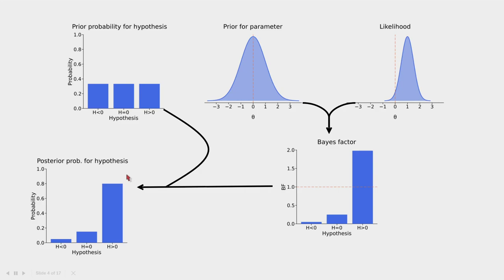This is for one study. To accumulate or combine evidence across multiple studies, we essentially repeat the same procedure — we compute a new likelihood based on each dataset. The difference is that on the second iteration, we don't start with equal hypothesis probabilities; instead, the posterior from the first analysis becomes the prior for the second analysis. Then that posterior becomes the prior for the third round, and so on, iterating until all datasets are analyzed. Ideally, one hypothesis will clearly dominate the evidence at the end.